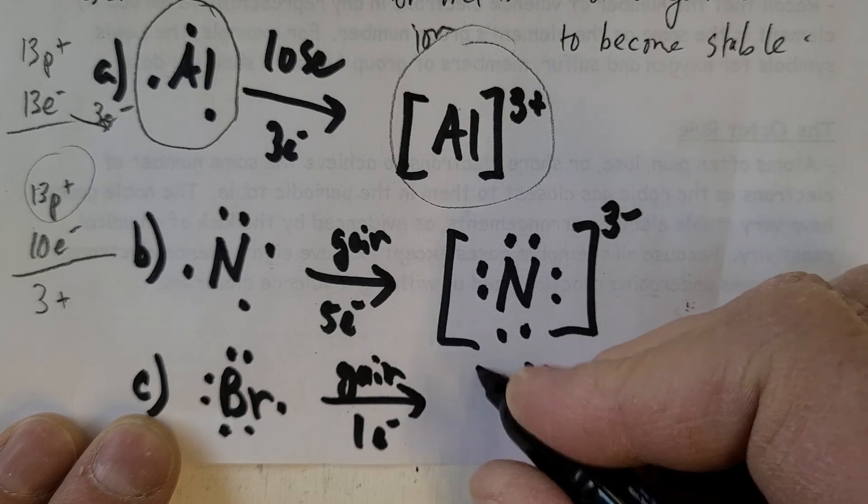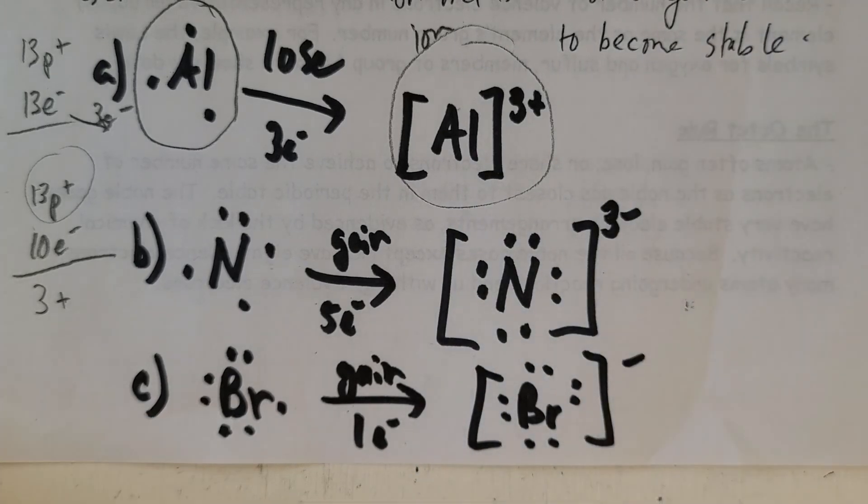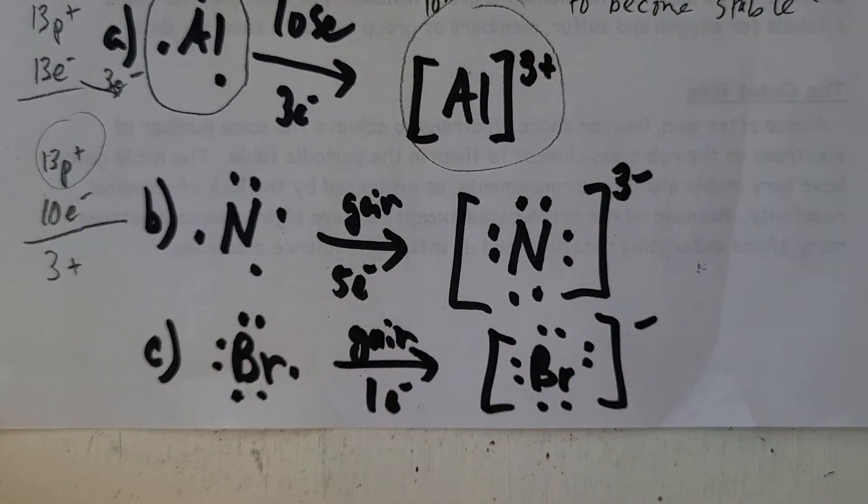And it'll look something like this: square bracket, it gained one extra one so it'll have one negative charge that's unbalanced. All right, so that's how you do that. Should be able to do the assignment now, and we'll see you again.